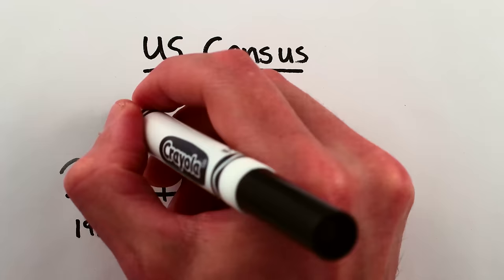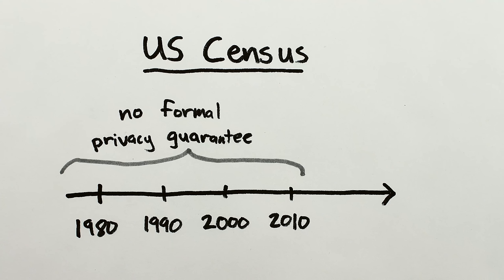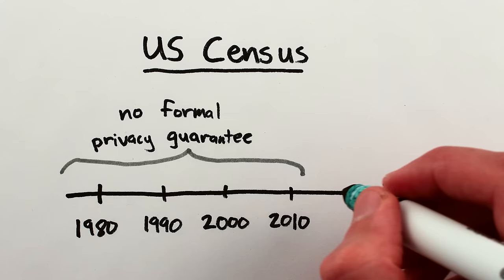But up through the 2010 census, the Census Bureau couldn't promise this. Sure, they were jittering the figures published in Census Bureau tables and charts, but not in a mathematically rigorous way. And so the Census Bureau couldn't mathematically promise anything about how much they were protecting our privacy or, say, how badly it's been violated. Until now.